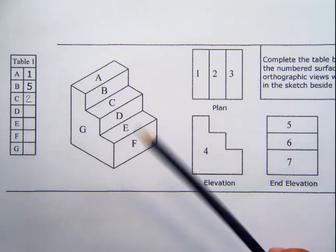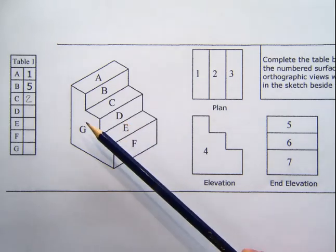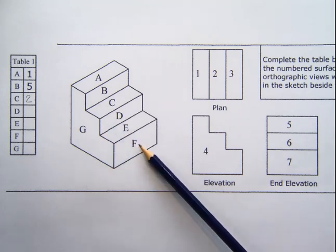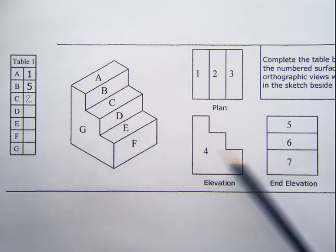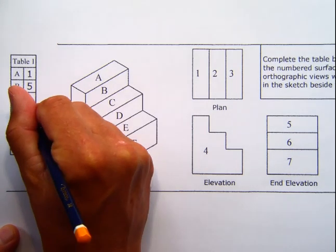Then we go the same for D. So D, again, like B, looking from the end elevation, so we're looking at, it's not the bottom step, it's the middle step. So we can know that on the end elevation, D must be number six.